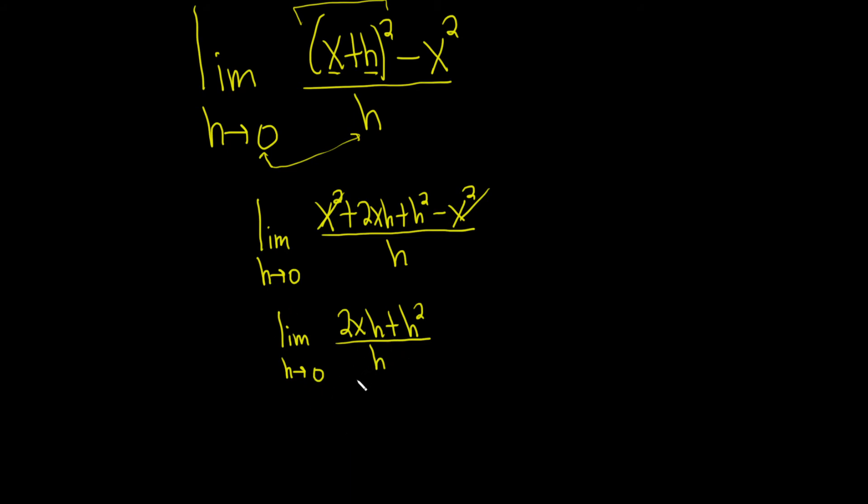Looks like we can factor out an h now in the numerator. So this is the limit as h approaches zero. h in parenthesis, looks like 2x and then plus h. Yeah that works because h times 2x is 2xh, h times h is h squared, so the factoring looks good. And it's being divided by h. Now they cancel.